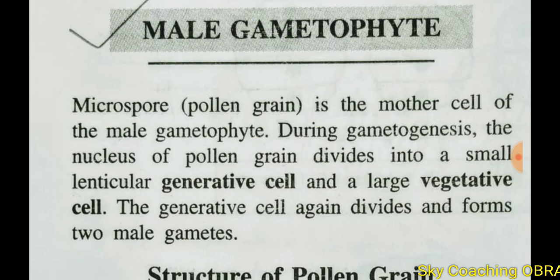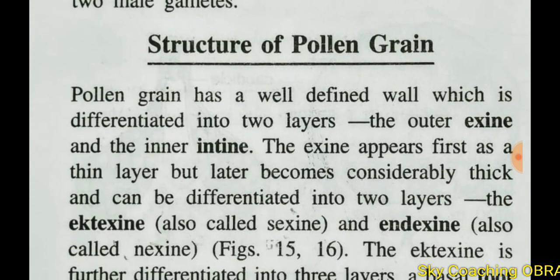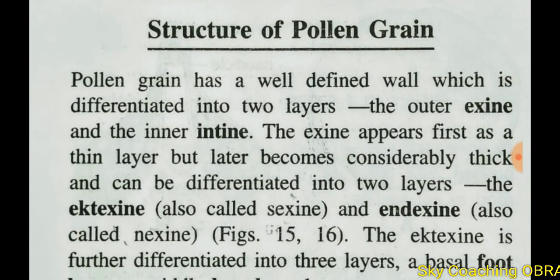The generative cell is further divided and forms two male gametes from the angiospermic plant. The pollen grain has a well-defined wall which is differentiated into two layers.